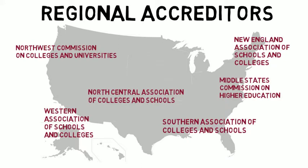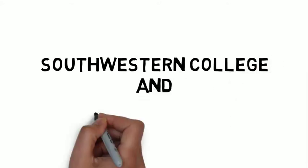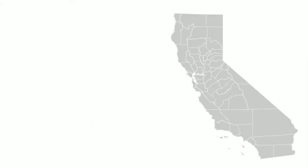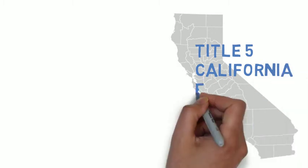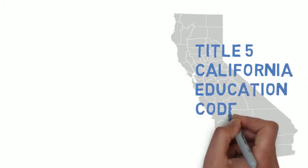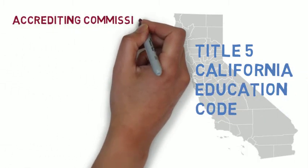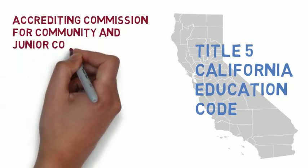The U.S. maintains regional accrediting agencies to enable colleges and universities to tailor educational offerings to meet the needs of their geographical areas. As required by Title 5 of the California Education Code, Southwestern College is a member of the Accrediting Commission for Community and Junior Colleges — the ACCJC.